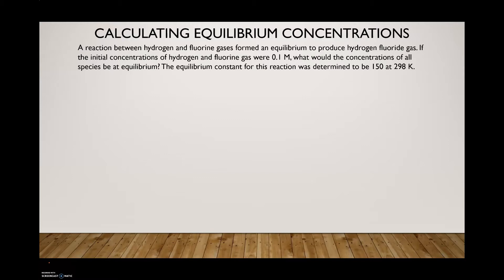Our first problem says a reaction between hydrogen and fluorine gases forming an equilibrium to produce hydrogen fluoride gas. If the initial concentrations of hydrogen and fluorine gas were 0.1 molar, what would the concentrations of all species be at equilibrium? The equilibrium constant for this reaction was determined to be 150 at 298 Kelvin. First, we need to write and balance the equation. Hydrogen gas is H₂, fluorine gas is F₂, and it forms 2HF. All three species are gases, so they're all involved in the expression. Remember that liquids and solids are not included, so pay attention to physical states.